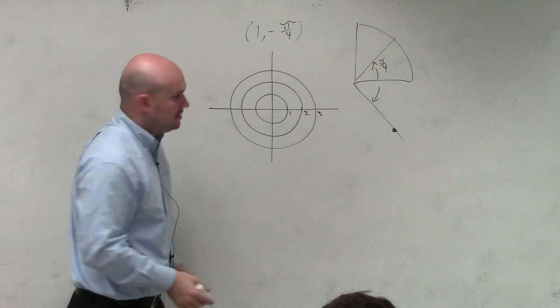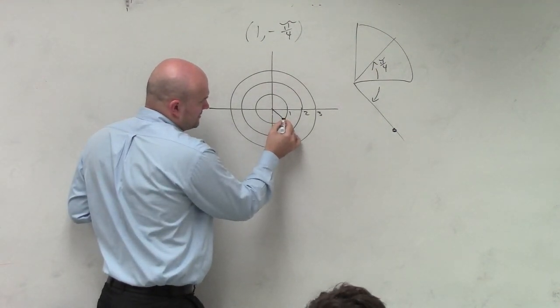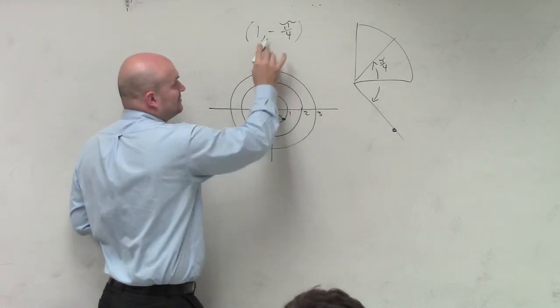Anybody agree with me? So therefore, I have this point here, it's right there. So my one point is 1, negative pi over 4.